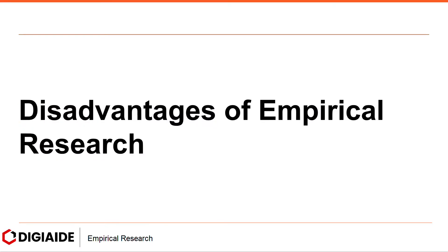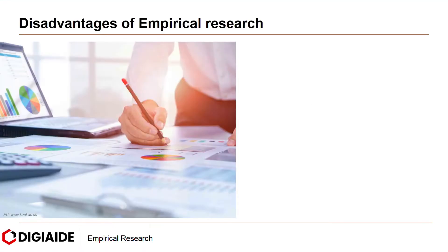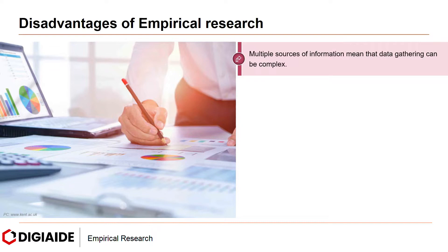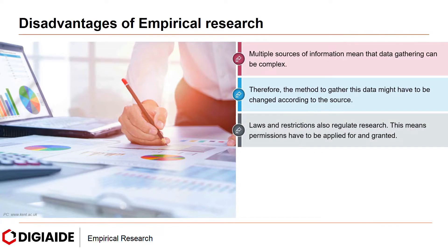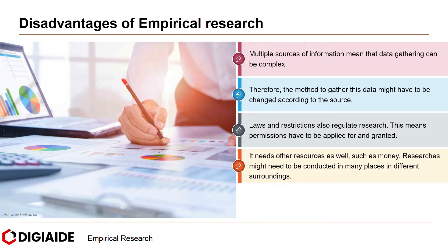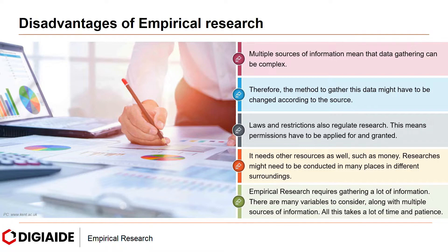Moving on to the disadvantages of empirical research. First, multiple sources of information mean that data gathering can be complex. Therefore, the method to gather this data might have to be changed according to the source. Laws and restrictions also regulate research, meaning permissions have to be applied for and granted. Next, it needs other sources as well, such as money — the searches might need to be conducted in many places in different surroundings. And finally, empirical research requires gathering a lot of information. There are many variables to consider along with multiple sources of information, and all this takes a lot of time and patience.